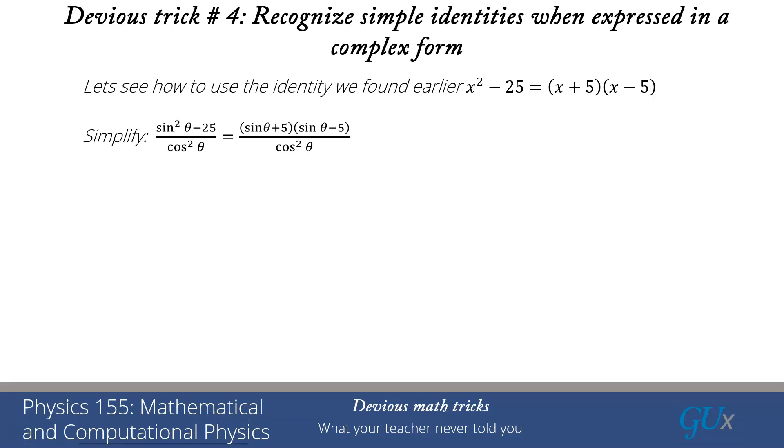We can recognize there that if x equals sinθ, I can immediately write that as (sinθ + 5)(sinθ - 5) divided by cos²θ. Now let me distribute that cos²θ as a denominator for each of those factors. You can see I'll get sinθ/cosθ and 5/cosθ. Using those trick definitions, I can rewrite that as (tanθ + 5secθ)(tanθ - 5secθ). We found an interesting identity just by recognizing that we already had that identity written in a more complex form.